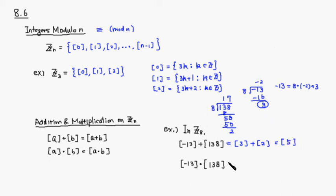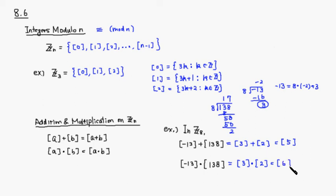This is the same deal for multiplication. It's equivalent to equivalence class represented by 3 times equivalence class represented by 2, which equals equivalence class represented by 6, since 3 times 2 is 6. That's it.